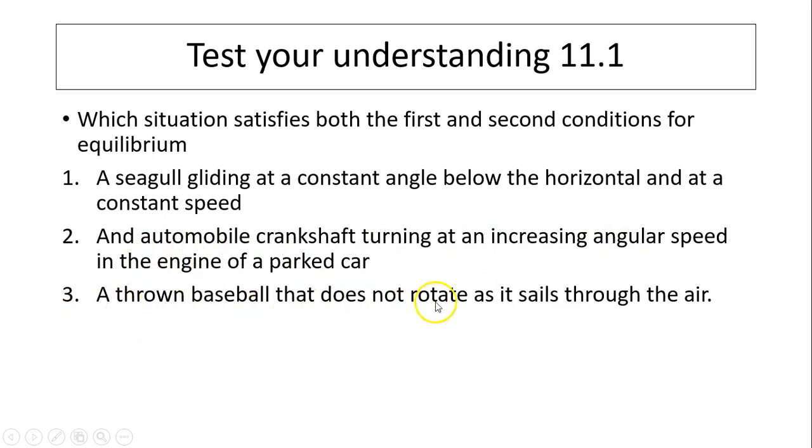Third one, a thrown baseball that does not rotate. If it does not rotate, there is no torque. Second condition is satisfied. Well, it sails through the air. Because it's going through air, so there is a net force of gravity acting on it. So net force is not zero. First condition is not satisfied. The answer is one.